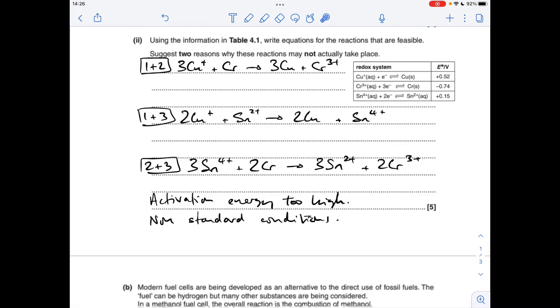So why might these reactions not actually happen? There's a couple of reasons you can give. You can give a kinetics reason, so you could say the activation energy is too high or the rate's too slow. The other thing I would say is that the conditions may not have been standard, which obviously would affect these values here.